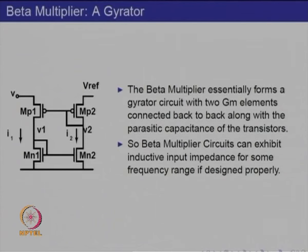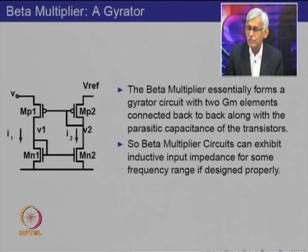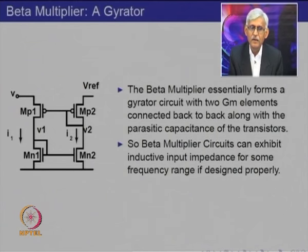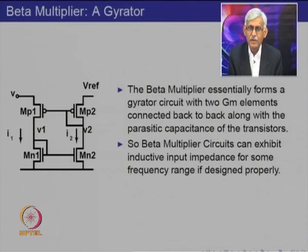The beta multiplier circuit, which we had seen earlier as a termination resistor, can itself provide an inductive component if properly designed. The reason is that the beta multiplier essentially forms a gyrated circuit with two gm elements connected back to back. These two have positive feedback connected back to back, and when two gm elements are connected back to back, they have the capability of converting a capacitor into an inductor. Therefore, the beta multiplier used as a terminator in current mode can exhibit inductive input impedance for some frequency range if properly designed. Our next task is to design the beta multiplier so that we get a required inductance on the order of hundreds of nanohenries.